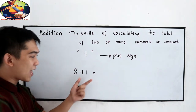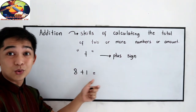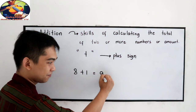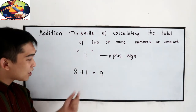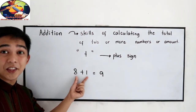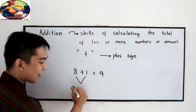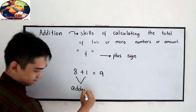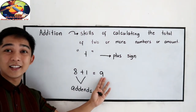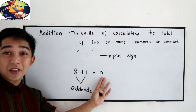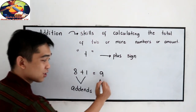We know that 8 plus 1 is equal to 9. The two numbers that we are adding is what we call the addends. And the total of the two numbers is what we call the sum.